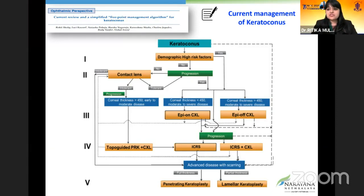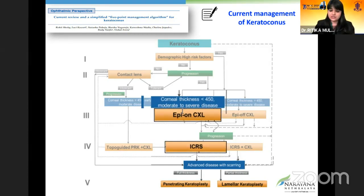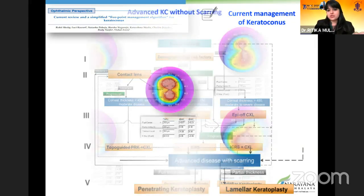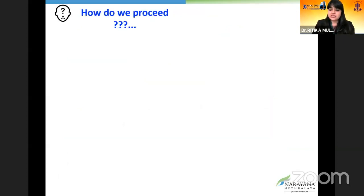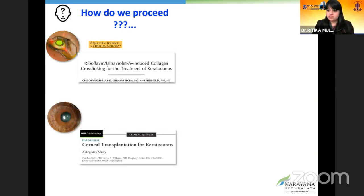The management of keratoconus along with its safety and efficacy has been well established. For corneas less than 450 microns, we can take the patient up for epi-on crosslinking or intracorneal ring segments. For patients with advanced disease with scarring, we post them for keratoplasty. But now we come to a cohort of patients who have advanced keratoconus, thin corneas, and no scarring. How do we proceed — do we do normal collagen crosslinking or post them for a keratoconus transplant?